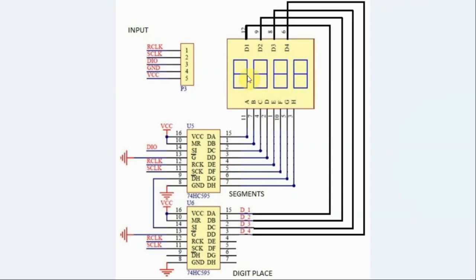The 4-digit 7-segment display is controlled by 74HC595 shift registers. The first shift register controls the segments, while the second shift register is used to select the digit.